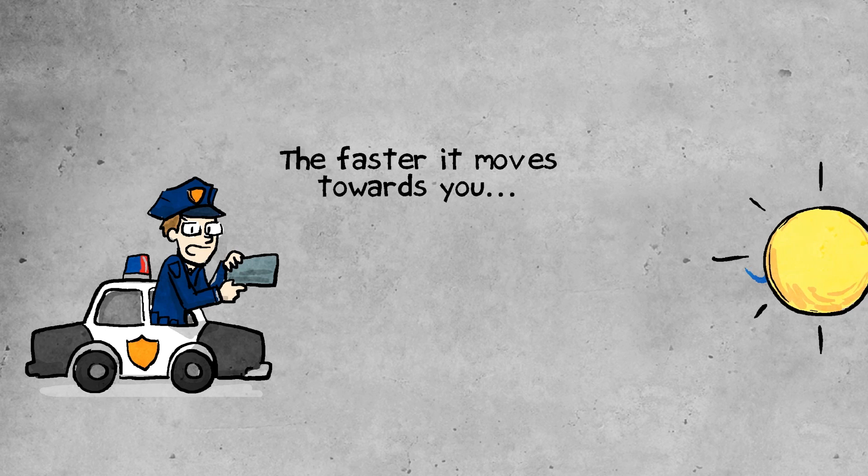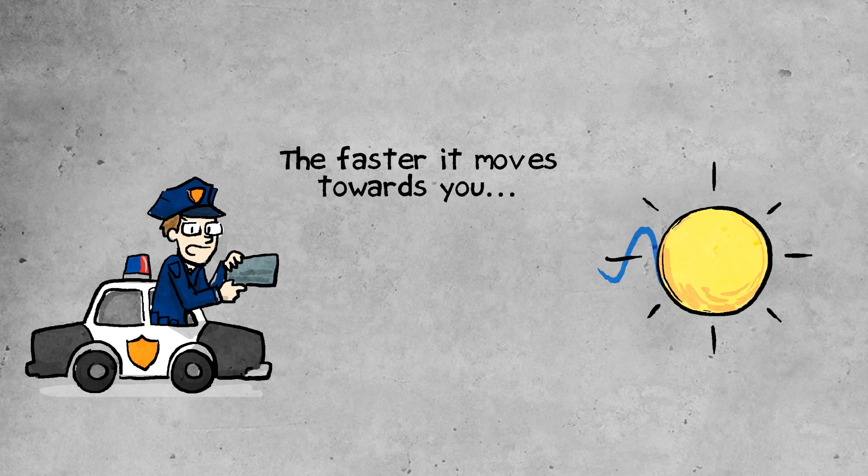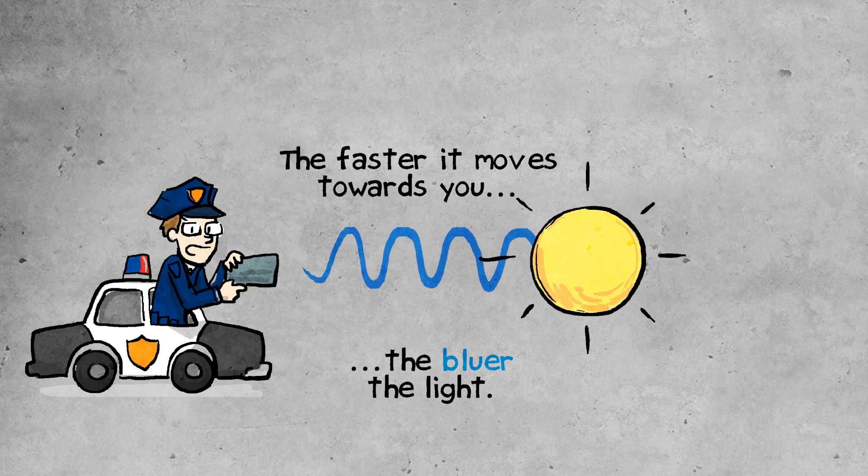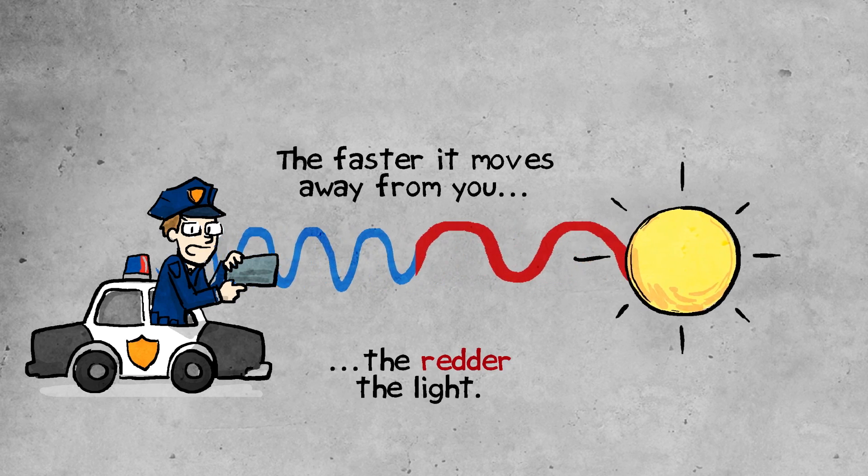The faster the star is moving towards you, the closer together the wavefronts would be, and the higher frequency or the bluer the light would appear. And then the faster it's moving away from you, the redder it appears.